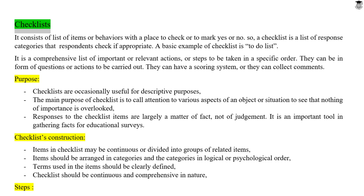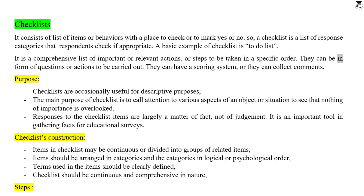Checklists consist of a list of items or behaviors with a place to check or mark yes or no. A checklist is a list of response categories that respondents check if appropriate. A basic example of a checklist is a to-do list — a comprehensive list of important or relevant actions or steps to be taken in a specific order. They can be in the form of questions or actions to be carried out, and they can have a scoring system or collect comments.